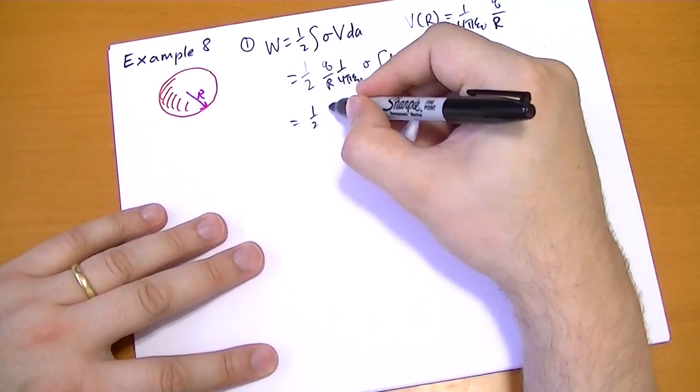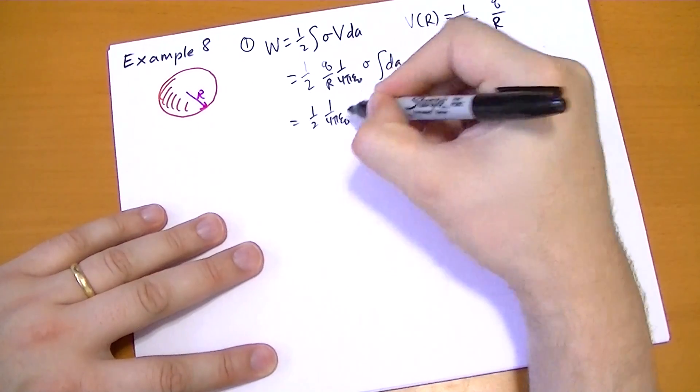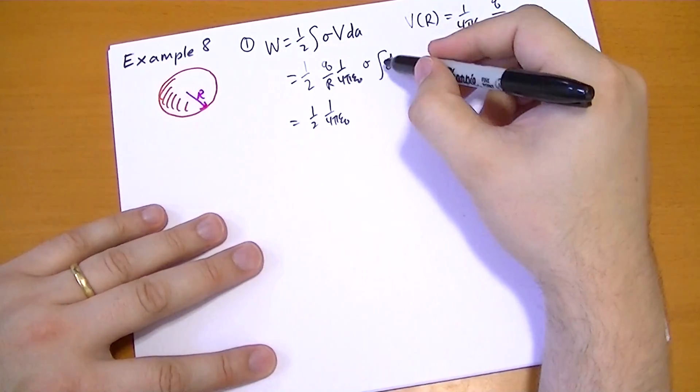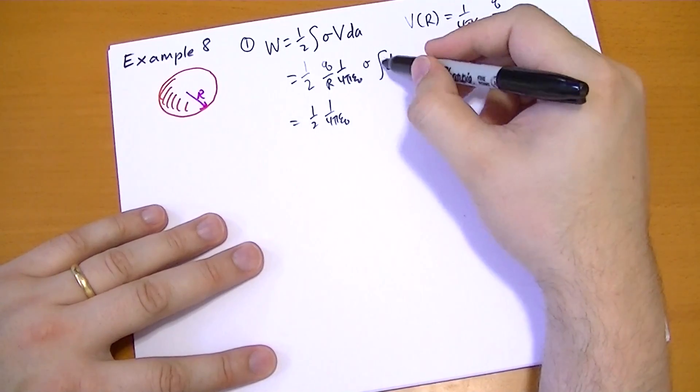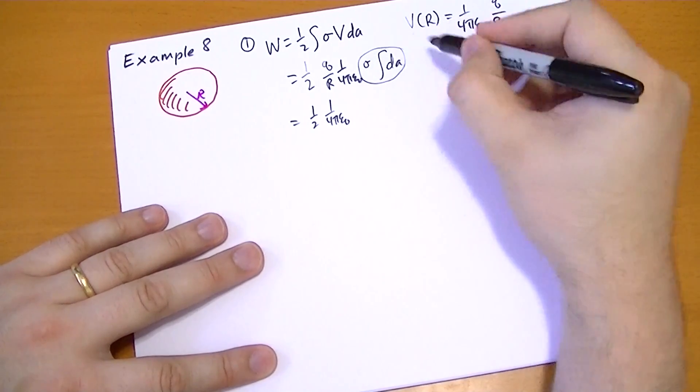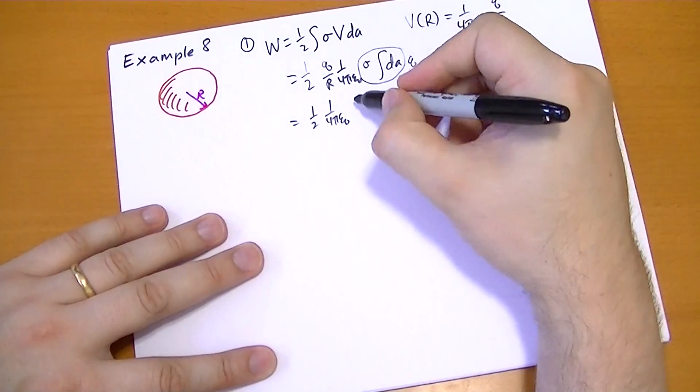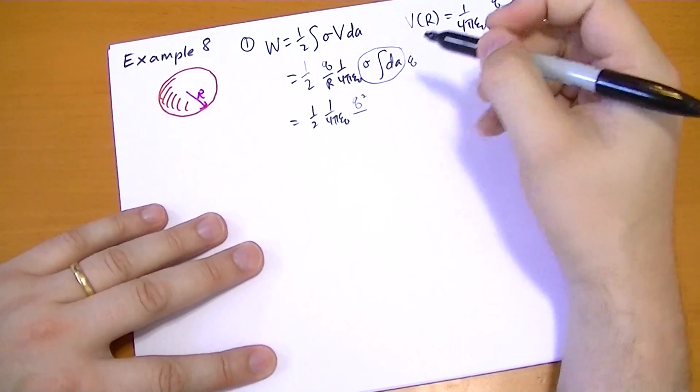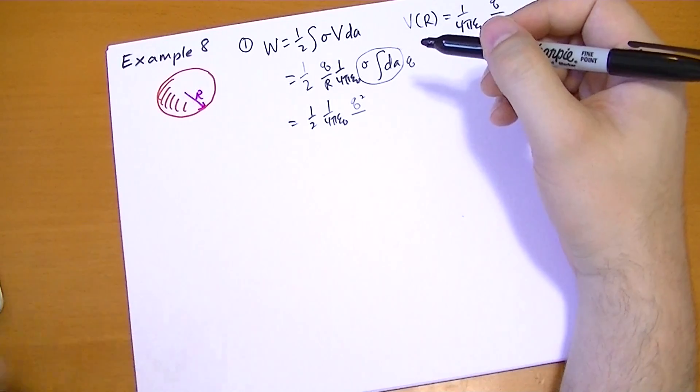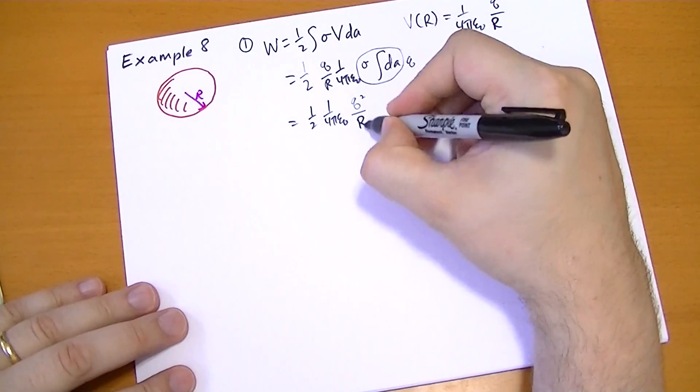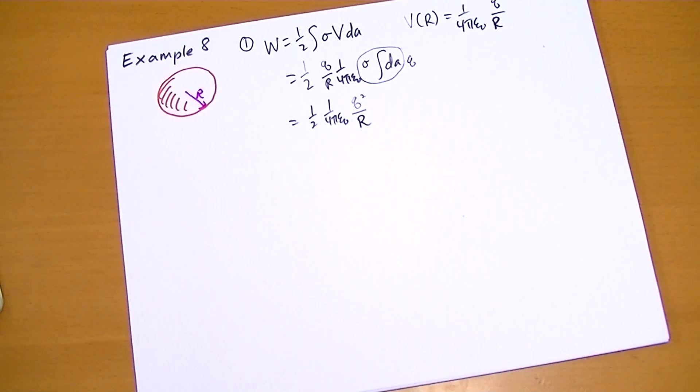So we go 1 half, 1 over 4 pi epsilon naught, sigma times 4 pi R squared. This is just going to be the total charge. So we have Q squared over R. That was kind of easy.